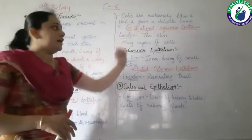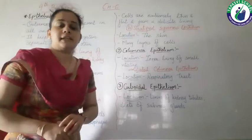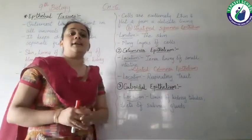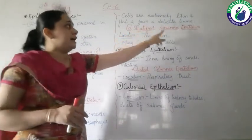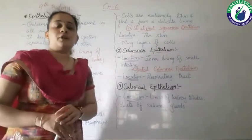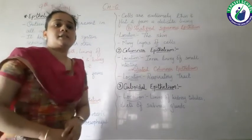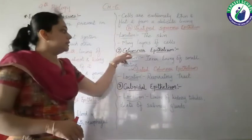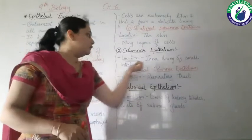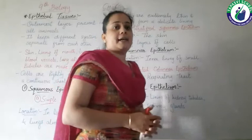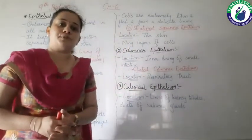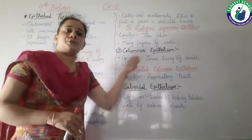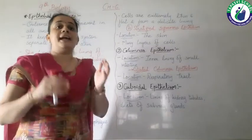Stratified squamous epithelium is generally located in the skin. The skin is made up of layers of cells, and as these layers are arranged in a pattern they are known as stratified squamous epithelium. Its function is to control the entry and exit of different materials. Columnar epithelium is generally located in the inner lining of the small intestine, where it performs the functions of secretion and absorption.